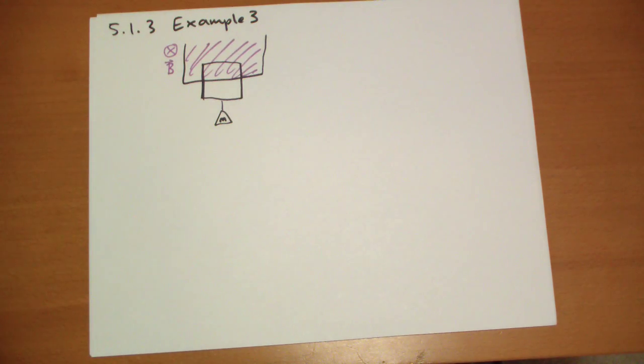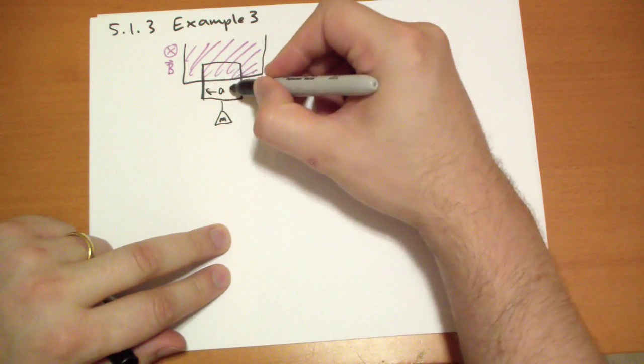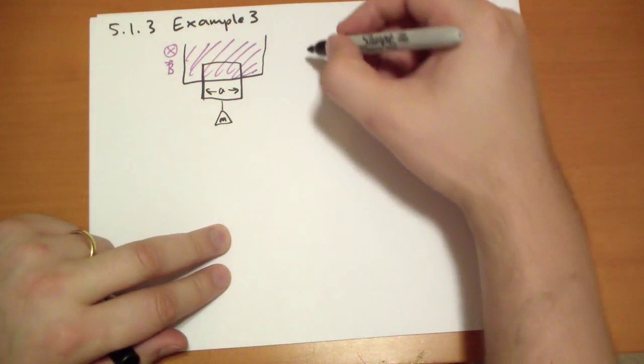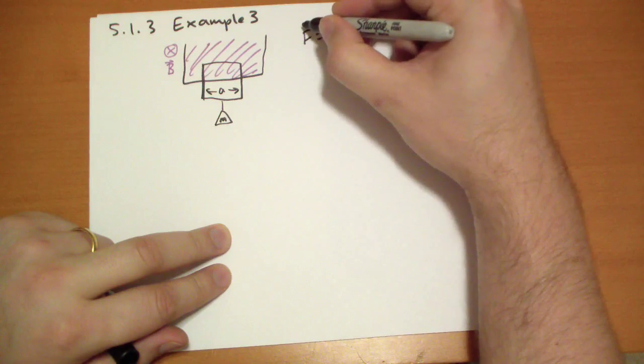Because of things we'll be learning about soon, there's actually going to be a current generated in that loop, but we're not going to think about that right now. We're just going to think about how much force is required to keep this thing stationary. So we have the force of gravity, the sum of the forces.